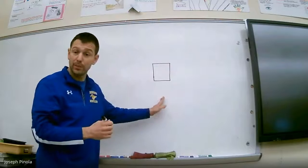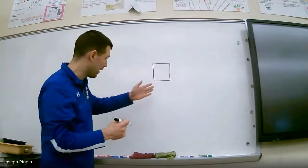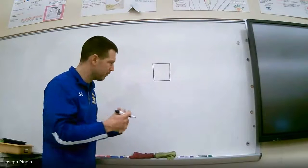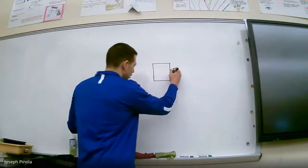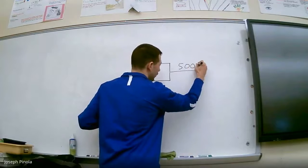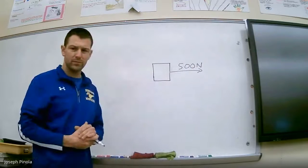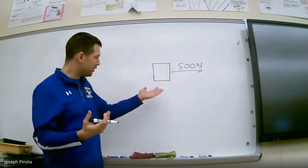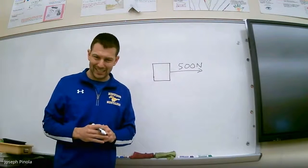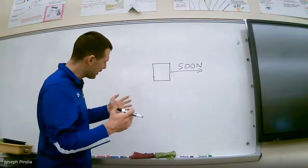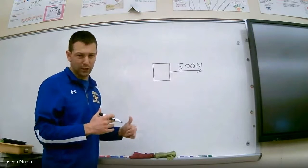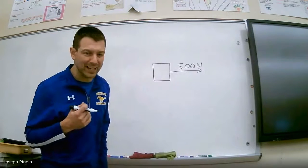Here's our fridge—I'll represent it with a square on my whiteboard. I was pulling the fridge with a force of approximately 500 newtons. Why did the fridge not accelerate? If you think back to our last lesson, it's pretty clear what's going on. There must have been some force going the other way that was working against me.